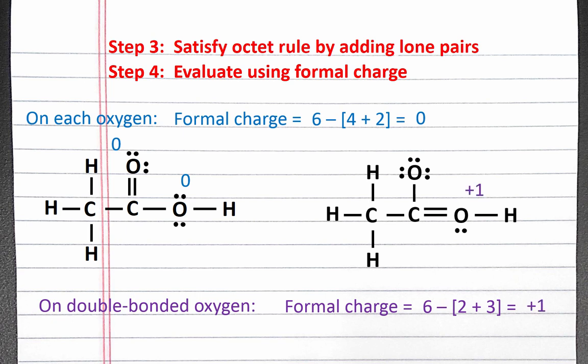This oxygen has a plus one formal charge. To calculate the formal charge of the single bonded oxygen in the structure on the right, oxygen normally has six valence electrons, subtract six lone pair electrons and one bond. So this oxygen atom has a negative one formal charge.